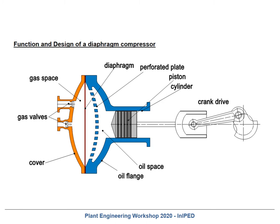Here are the basic function and design of a diaphragm compressor. We have a classical crank drive — crankshaft, connecting rod, crosshead, piston rod, and piston. This is identical to a reciprocating compressor, but the piston does not directly compress the gas; instead it moves oil back and forth. So the piston rings do not seal gas — they seal the oil flow.